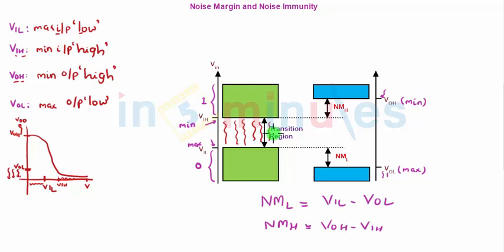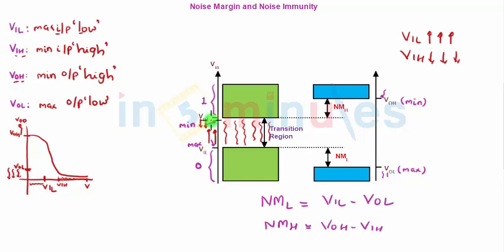So technically you want your indeterminate zone to be as small as possible, which means that VIL should be very high or VIH should be very low. From the curve, VIH and VIL should be very close to each other with a very small indeterminate zone. If that's the case — VIL is very high and VIH is low — you will have NML to be a higher value and NMH to be a higher value as well.